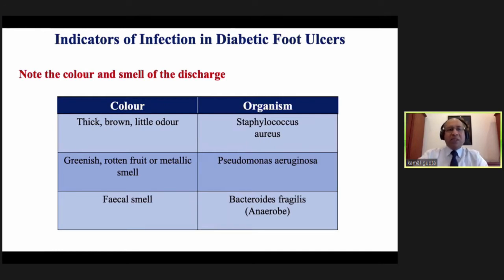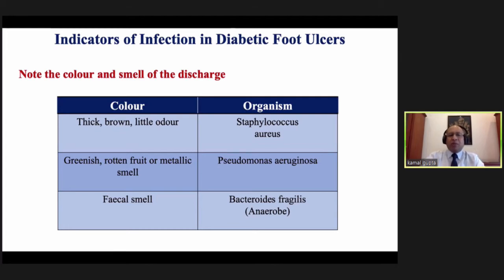By looking at the wound or dressing, can we identify what type of organism we are dealing with? If the color of the dressing or wound is thick brown with little odor, it means Staphylococcus aureus. If it is greenish, that means Pseudomonas. If there is fecal smell, that means Bacteroides species is present.